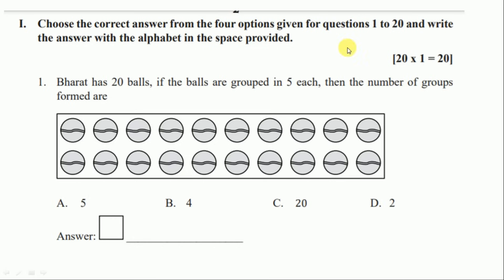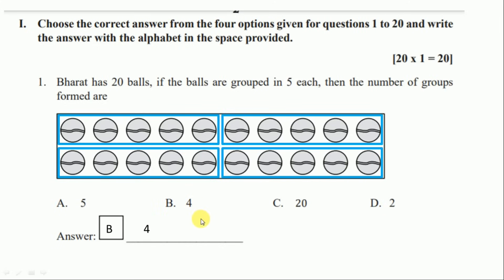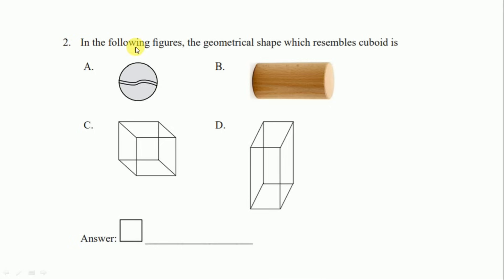Question number one: choose the correct answer from the four options given for questions one to twenty and write the answer with the alphabet in the space provided. Bharat has twenty balls. If the balls are grouped in five each, then the number of groups formed are — we make groups of five balls: first group, second, third, and fourth group. The correct option is option B, four.